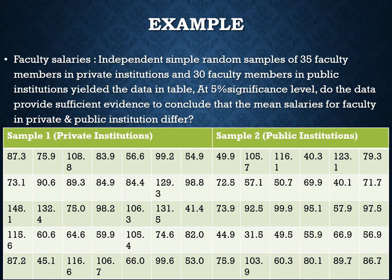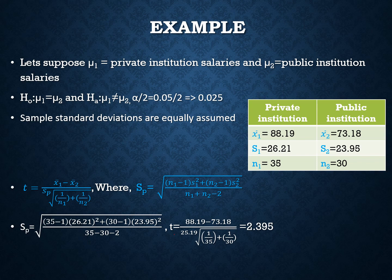At the 5% significance level, do the data provide sufficient evidence to conclude that the mean salaries of faculty in private and public institutions differ? The significance level alpha is 0.05. Since the alternative hypothesis states the institutions differ, we use an inequality sign, making this a two-tail test. Let mu1 equal private institution salaries and mu2 equal public institution salaries.